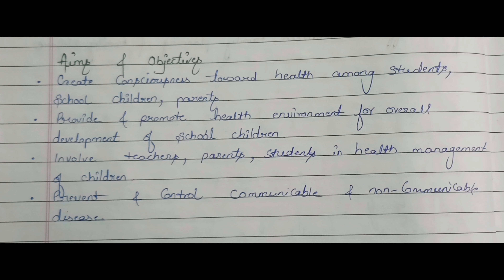There are some aims and objectives of this topic. The first aim is to create consciousness toward health among students, school children, and parents. The second aim is to provide and promote a healthy environment for the overall development of school children. The third aim is to involve teachers, parents, and students in the health management of children. The fourth aim is to prevent and control communicable and non-communicable diseases.